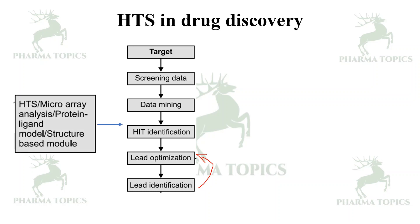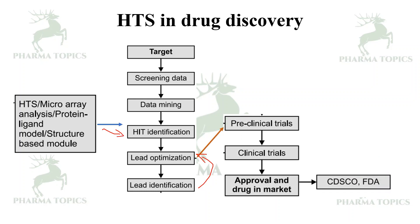At the hit identification step, high throughput screening or microarray analysis, rational ligand modeling, and structure-based modeling all contribute. Then the successful leads go for in vitro and in vivo trials, followed by preclinical trials, then clinical trials, and they get approved in the market by USFDA or CDSCO.